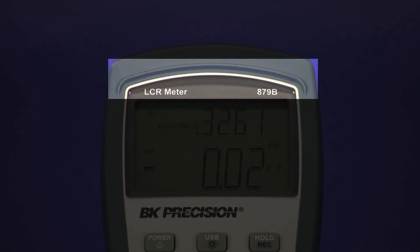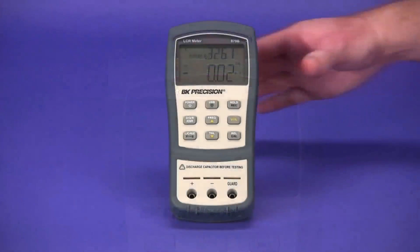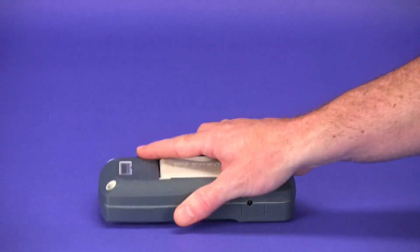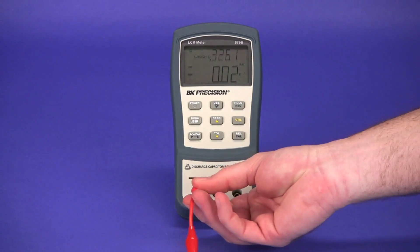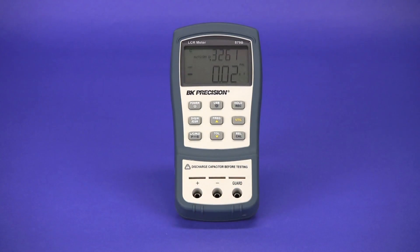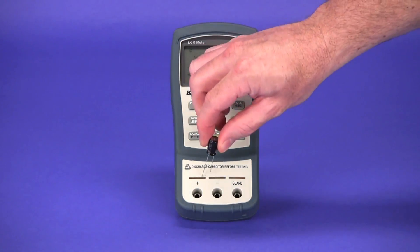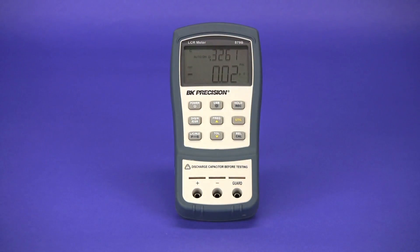Also included is the LCD visor to reduce the risk of the display being scuffed or scratched when placed face down. The input jacks include both banana for use with short test leads and blade style jacks that allow the direct insertion of leaded components.